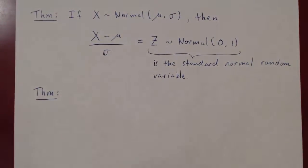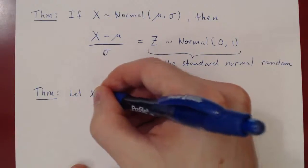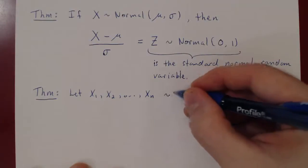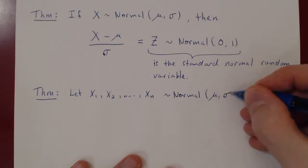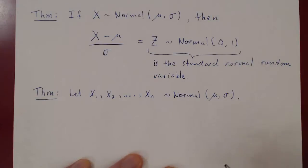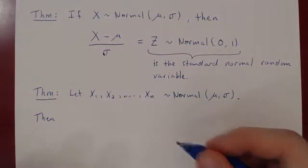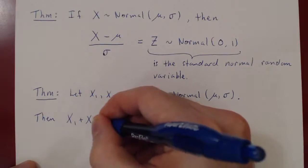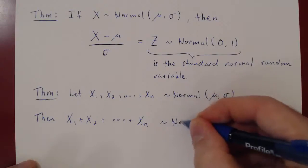Here is the second theorem. Suppose we have n normal random variables — x1, x2, up to xn — all with the same mean of mu and the same deviation of sigma, and we assume that each random variable is independent from the others. Then, if you add these random variables — x1 plus x2 plus up to xn — this will also be a normal random variable.